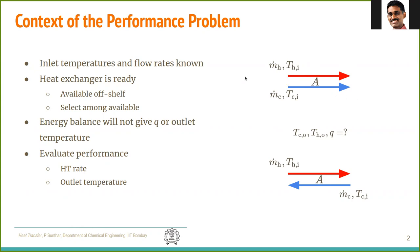Unlike the LMTD method, we cannot do an energy balance to get an outlet temperature, because you need to know at least one outlet temperature to find the other. So we cannot use energy balance to determine the outlet temperature. This class of problem is known as performance evaluation — evaluating what heat rate is available. If the heat rate is known, you can use energy balance to find the outlet temperature, which tells you how much you can heat up the cold fluid.